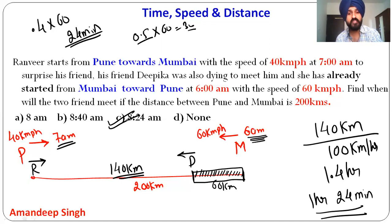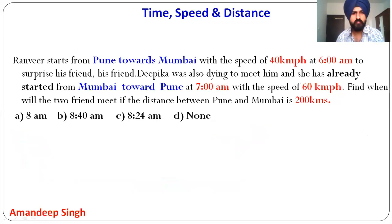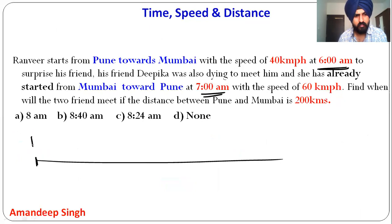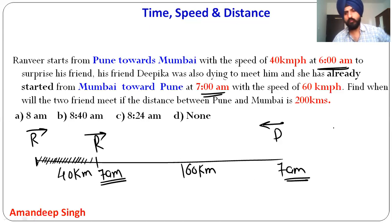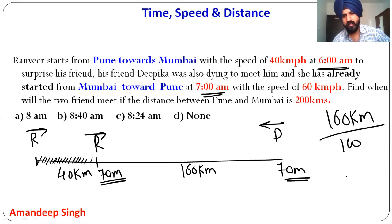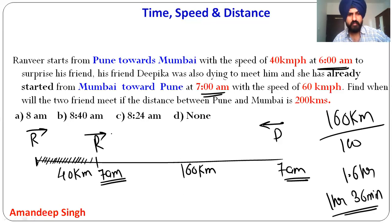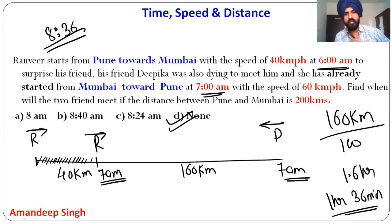Another variation: Ranvir starts at 6 am and Dipika starts at 7 am. Ranvir starts first, so from 6 am to 7 am, Ranvir covers 40 km. Remaining distance = 200 minus 40 = 160 km. Now both start moving at 7 am in opposite directions at relative speed of 100 km/h. Time = 160 divided by 100 = 1.6 hours = 1 hour 36 minutes. Starting from 7 am, they meet at 8:36 am.